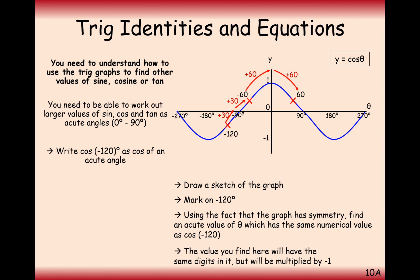Cos of minus 120, because it's a negative down here, this value here is going to be equal in value to this point here. It would just be the negative of it. So cos of minus 120 here is going to equal minus cos of 60. The 60 here is the acute angle, but we need a negative on there because it's going to be the negative of cos of minus 120.